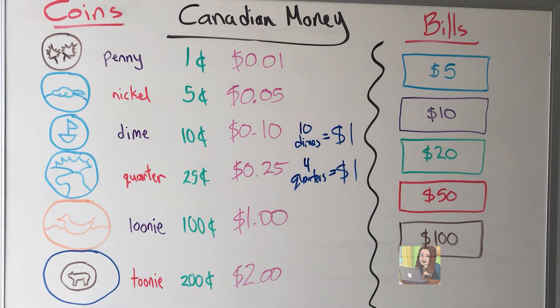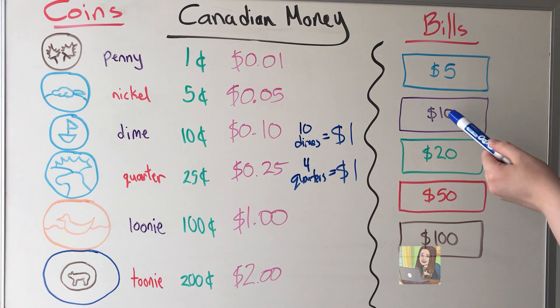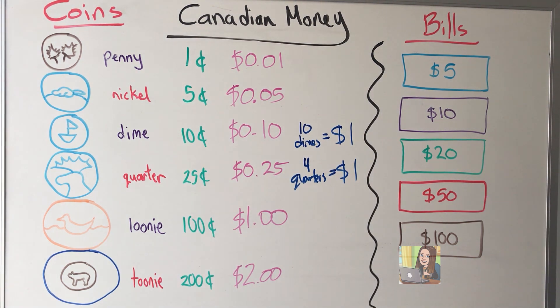Lastly, we'll look at the bills. We have a blue $5 bill, a purple $10 bill, a green $20 bill, a red $50 bill, and a brown $100 bill.